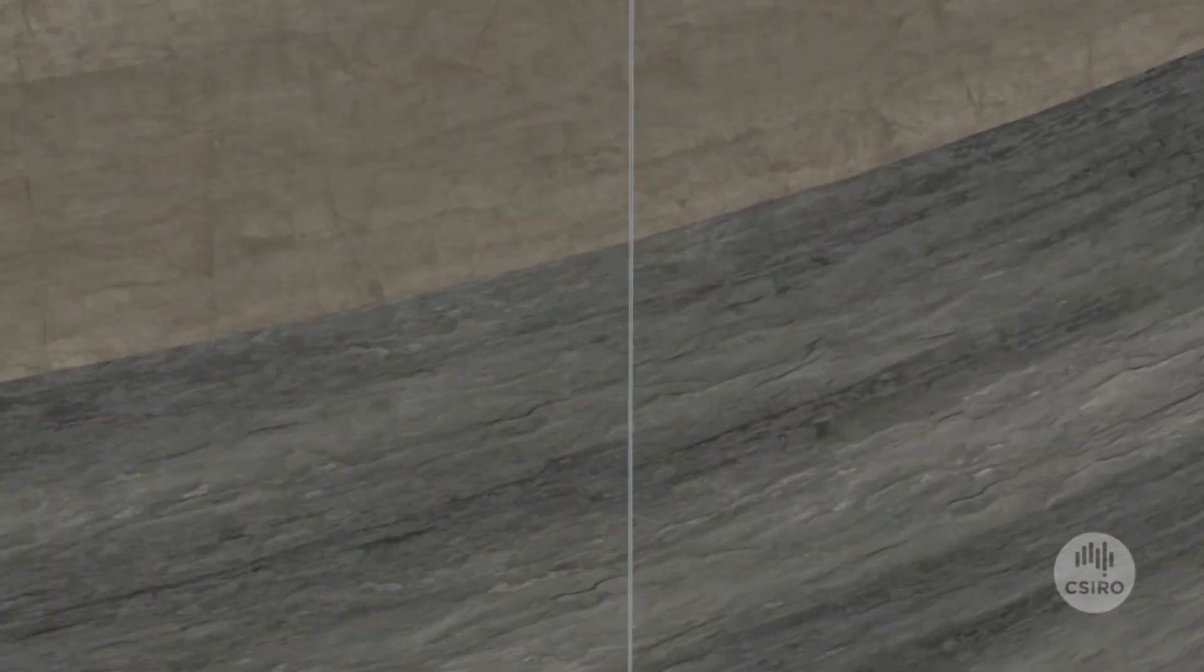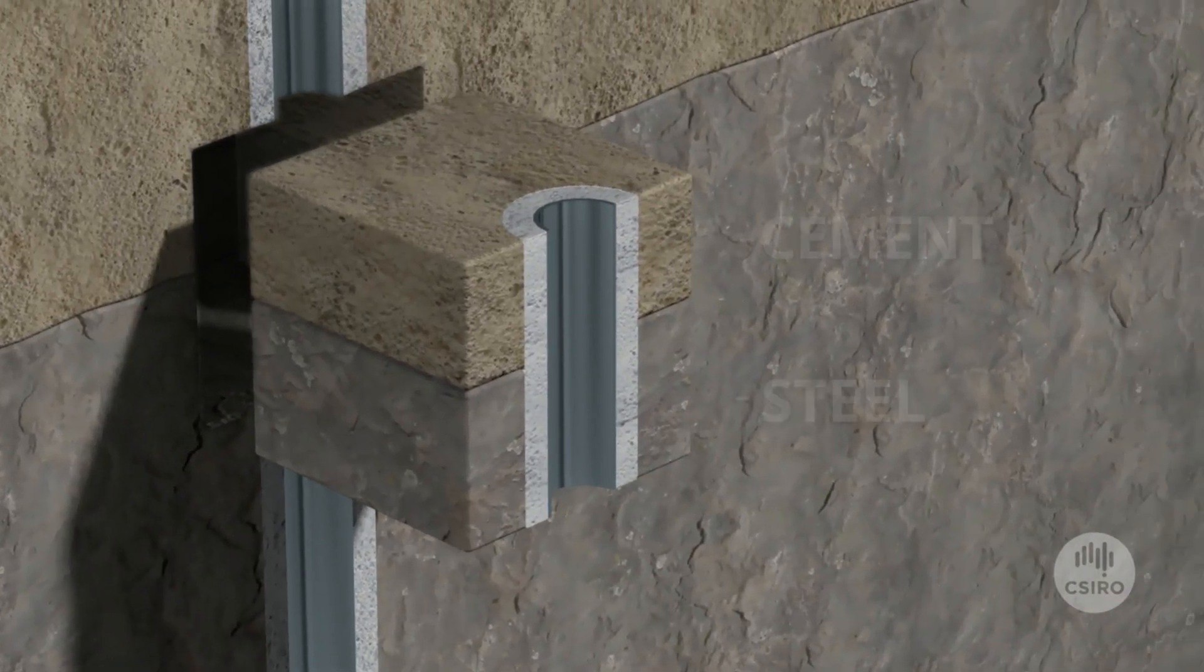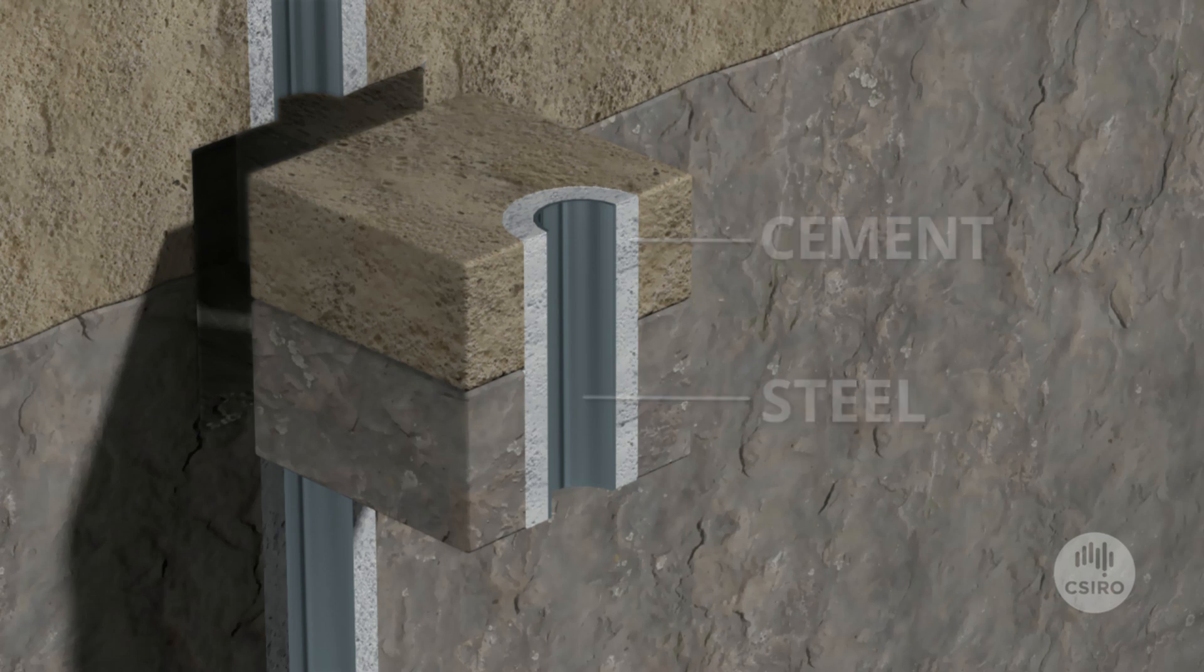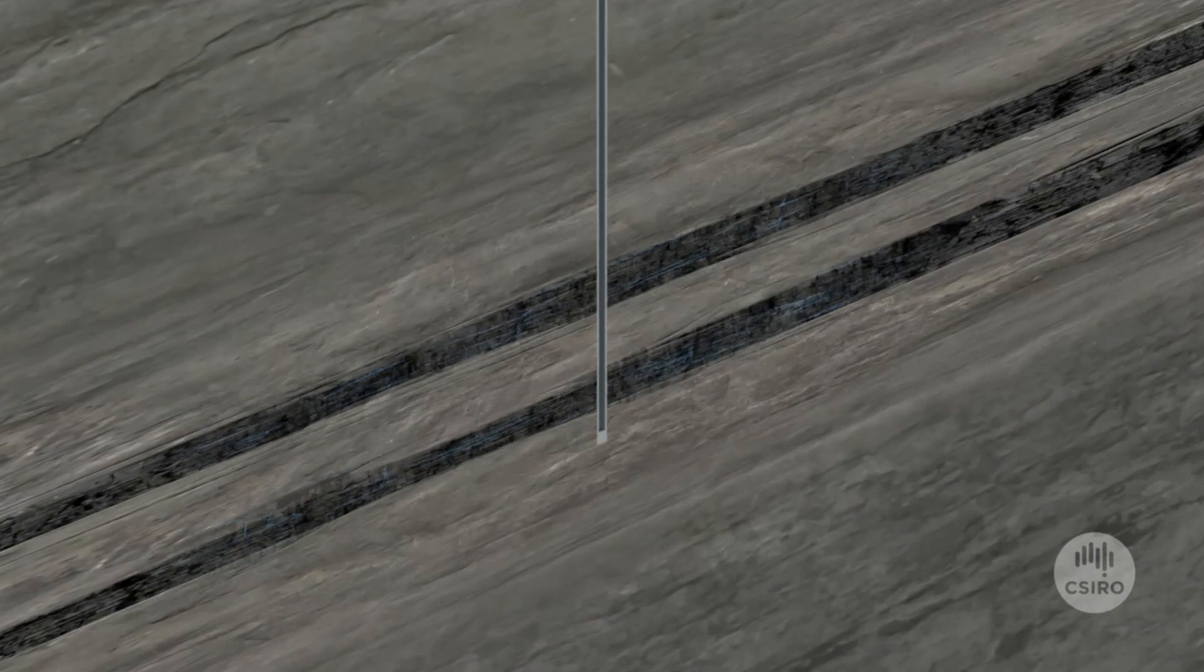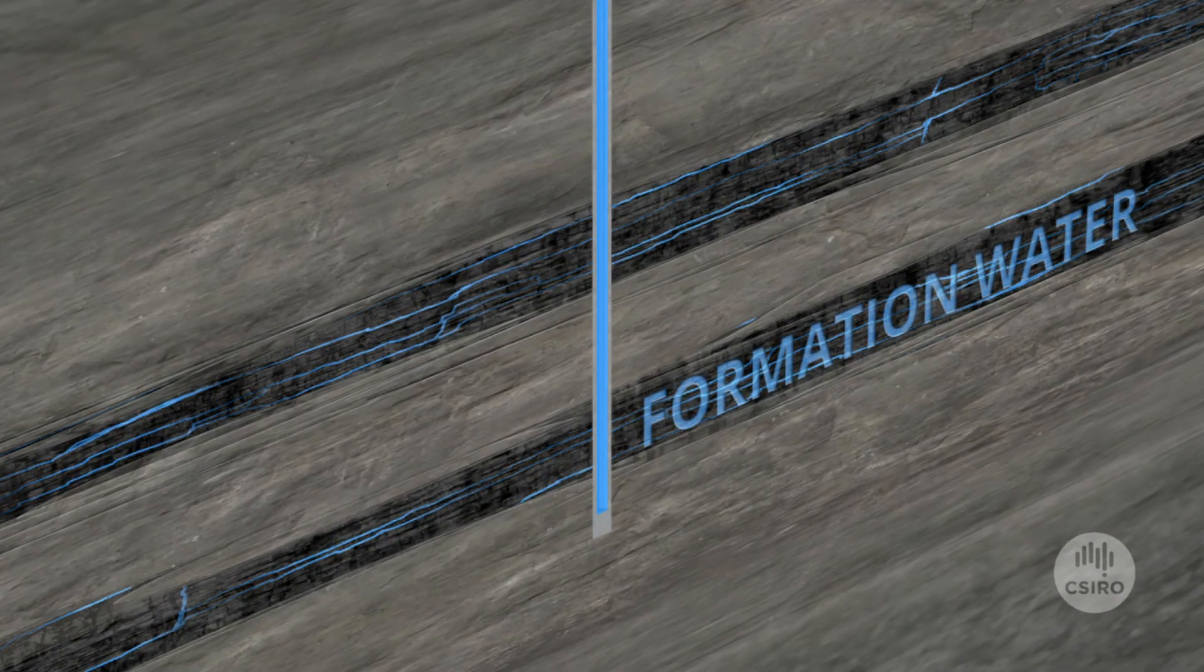To protect groundwater from being contaminated, the well is lined with cement and steel casings. Water already in the coal seam is pumped out to release the trapped gas.